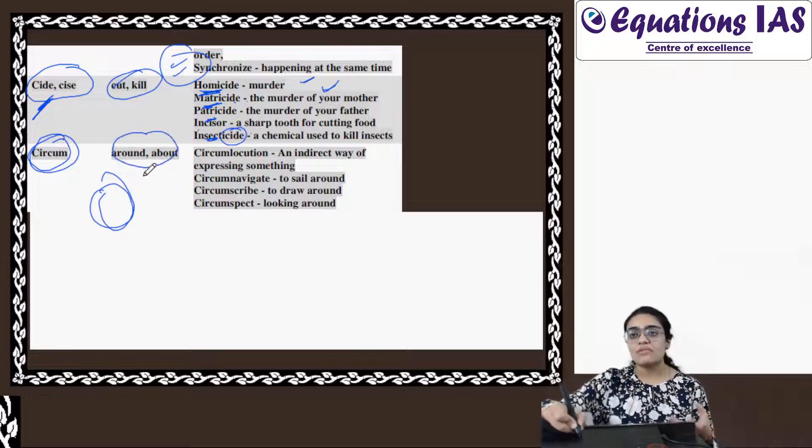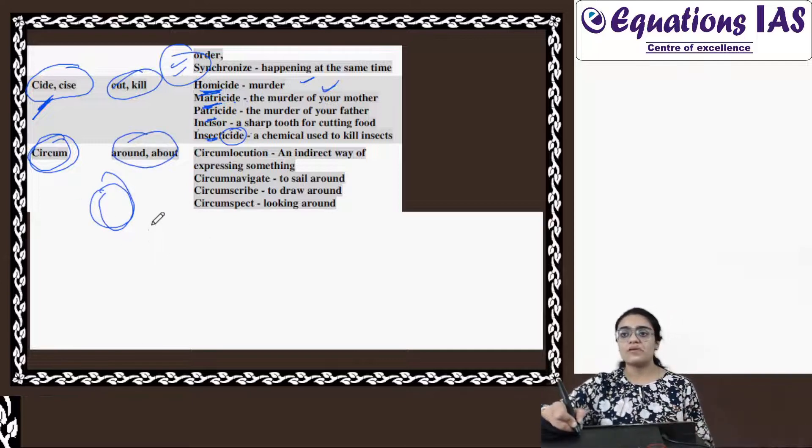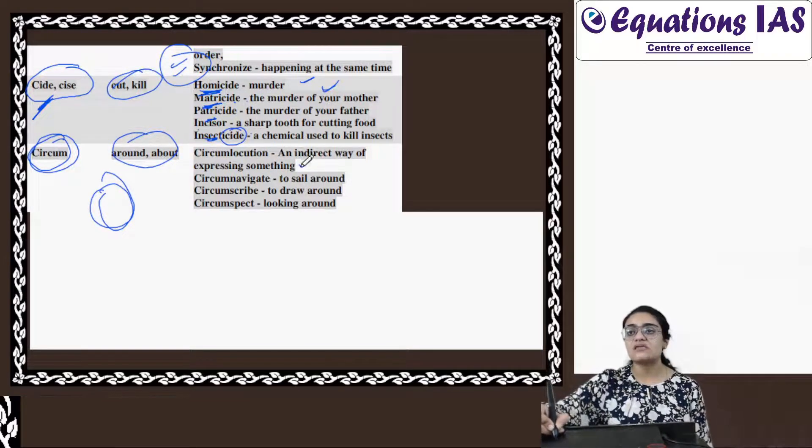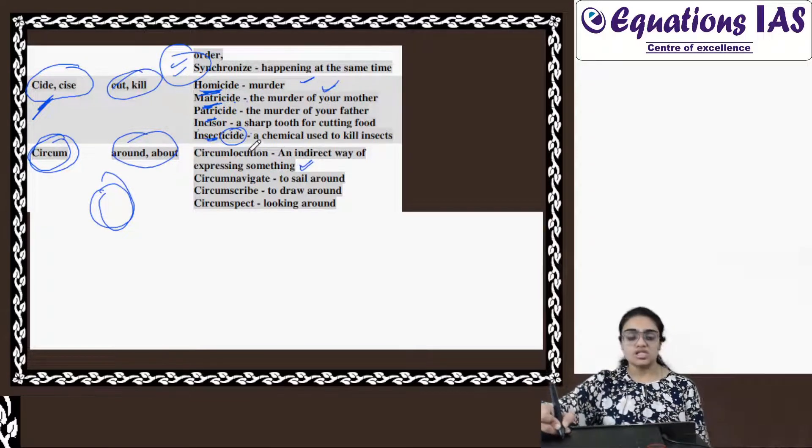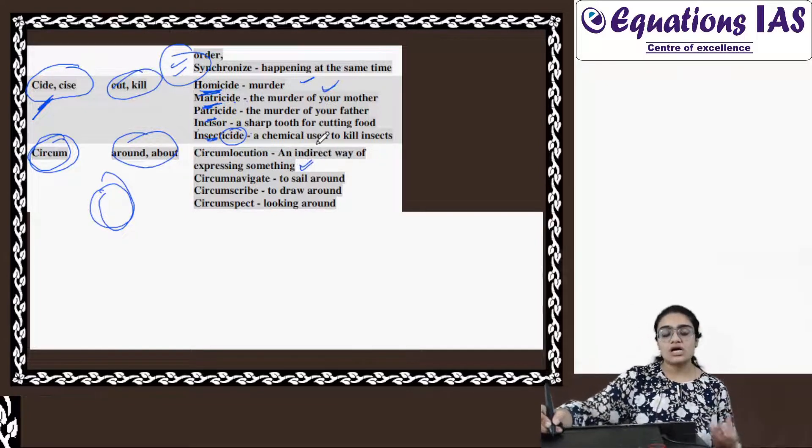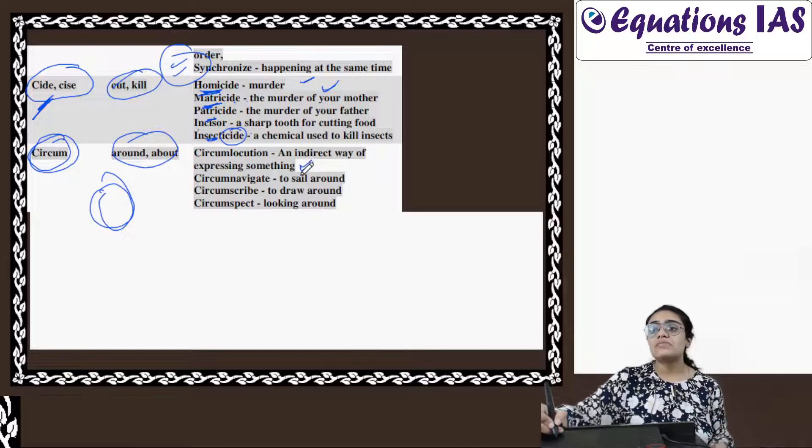Circumlocution - an indirect way of expressing something. Circumlocution - indirectly, gol mol batai karna, like circum.